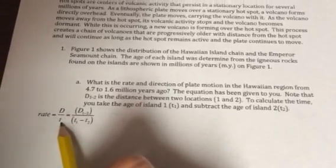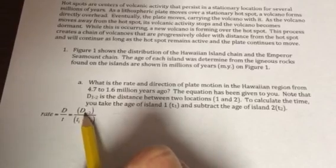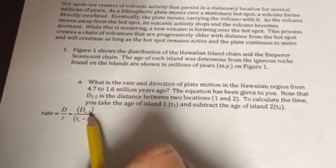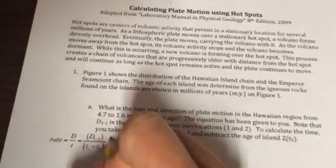Okay, so what we need to do to calculate the rate is we need to find the distance, and we're going to divide it by time. That's how we find rate. So we need the distance between the first and the second location, divided by the age between those two locations.